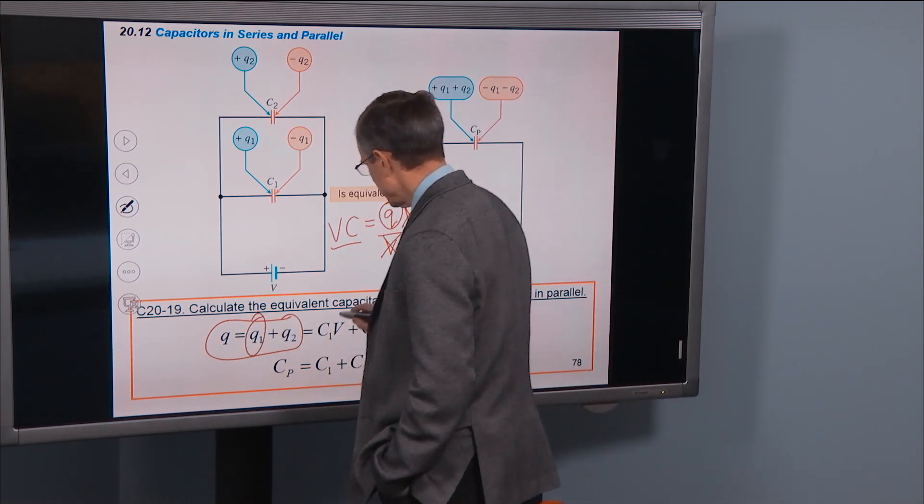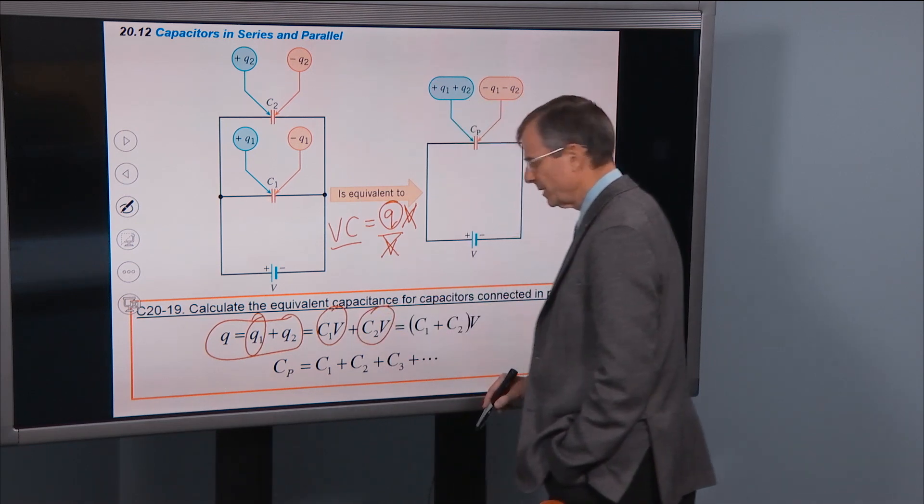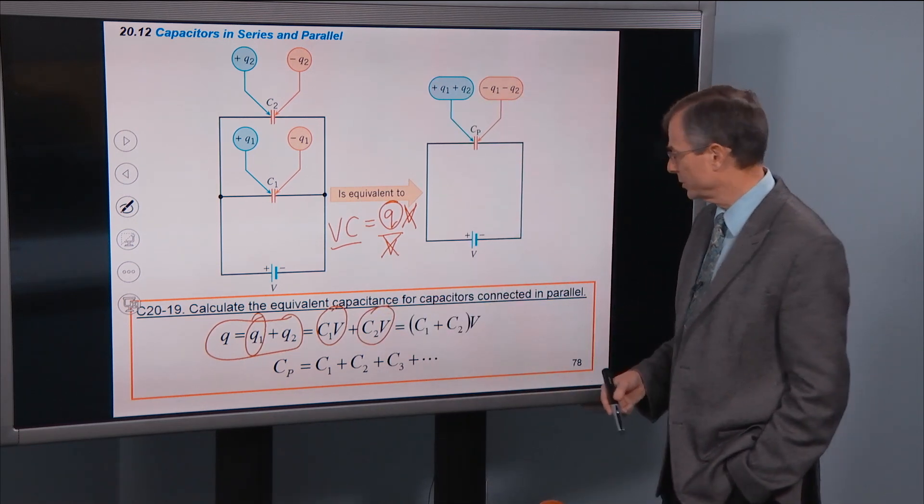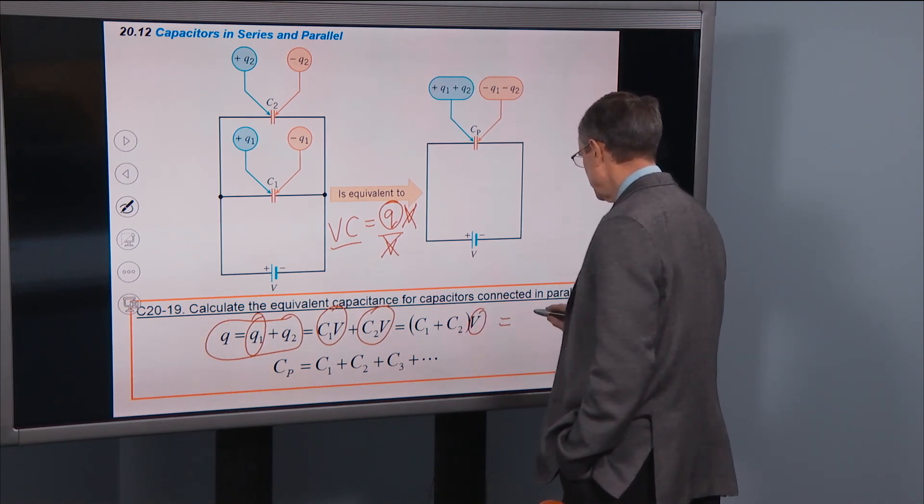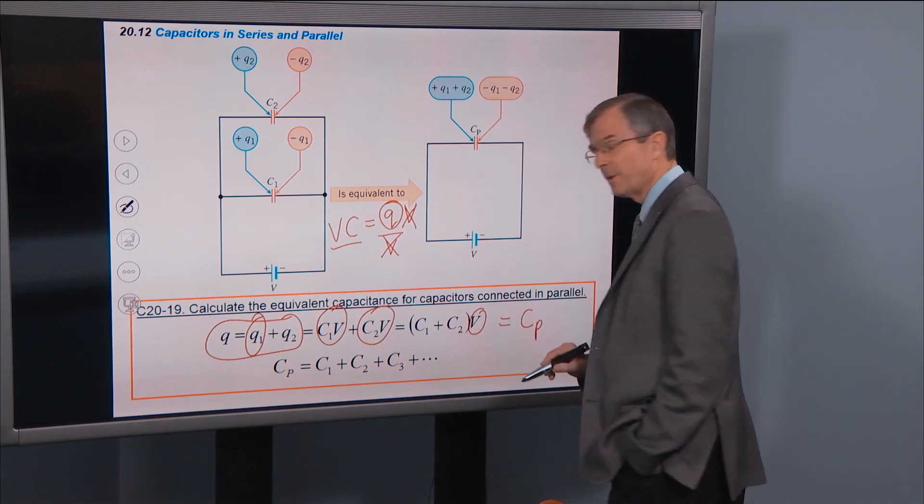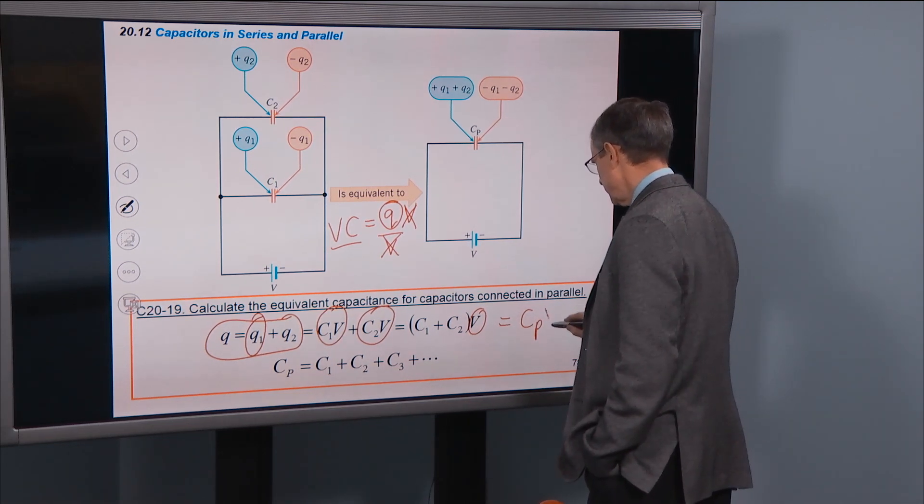So the charge on one of the capacitors is c1 times v. The charge on the other one is c2 times v. We have a common v in both terms. We factor that out and set that equal to the equivalent capacitance for capacitors in parallel times v.